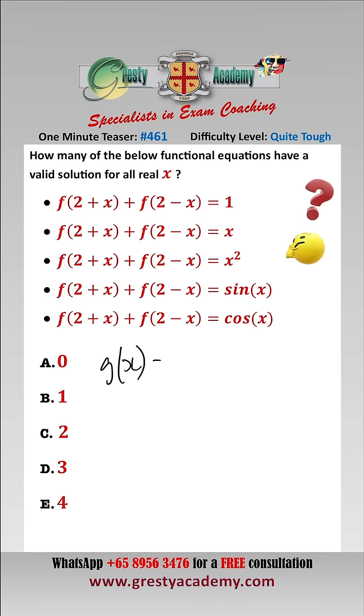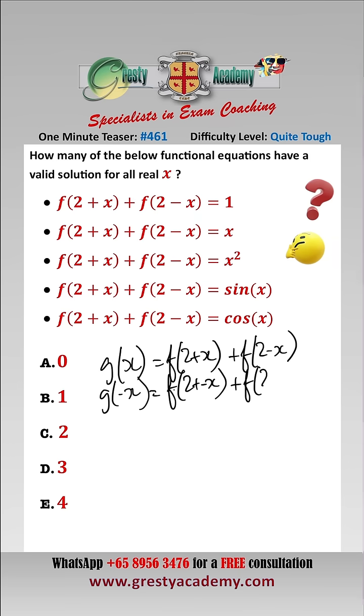If we let g of x equal f of 2 plus x plus f of 2 minus x, then g of minus x is equal to f of 2 plus minus x plus f of 2 minus minus x,